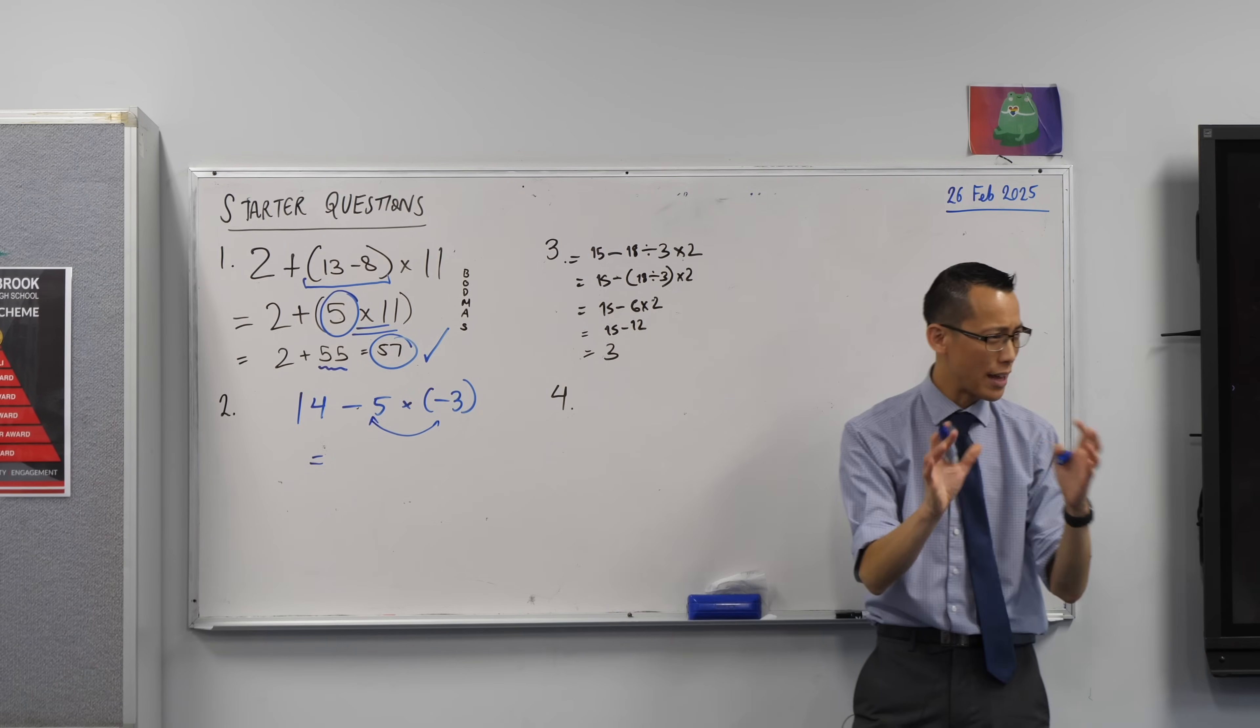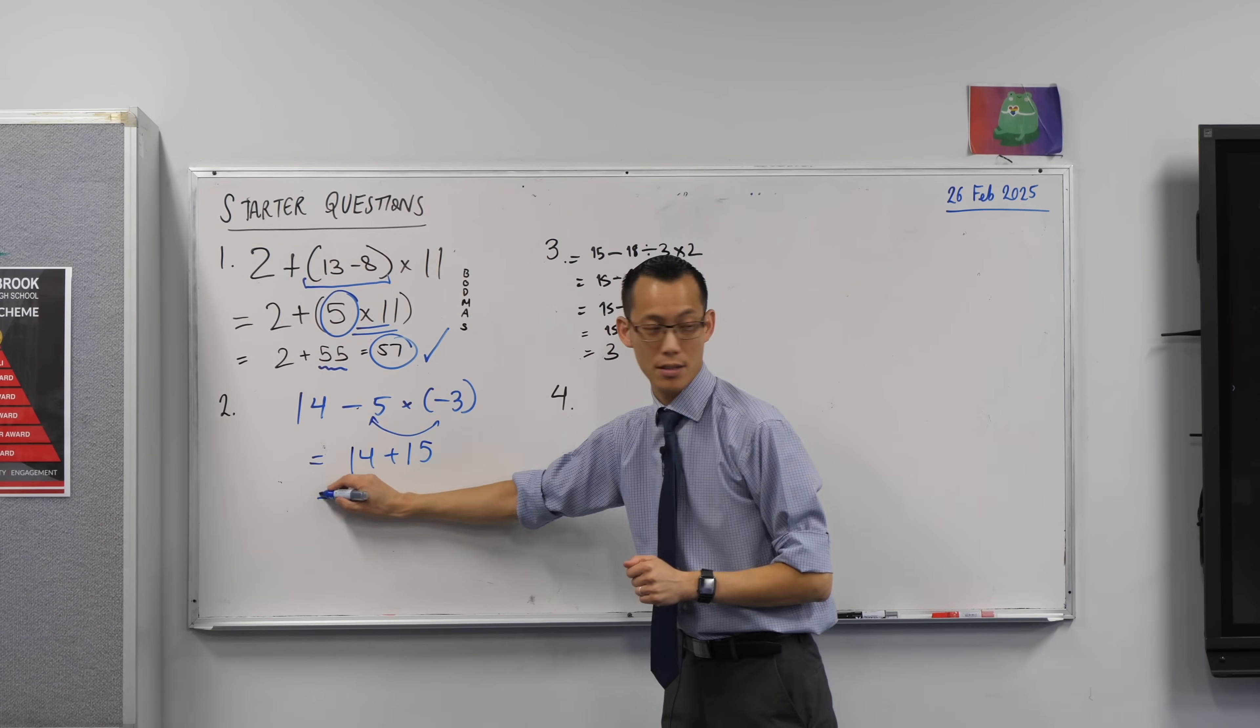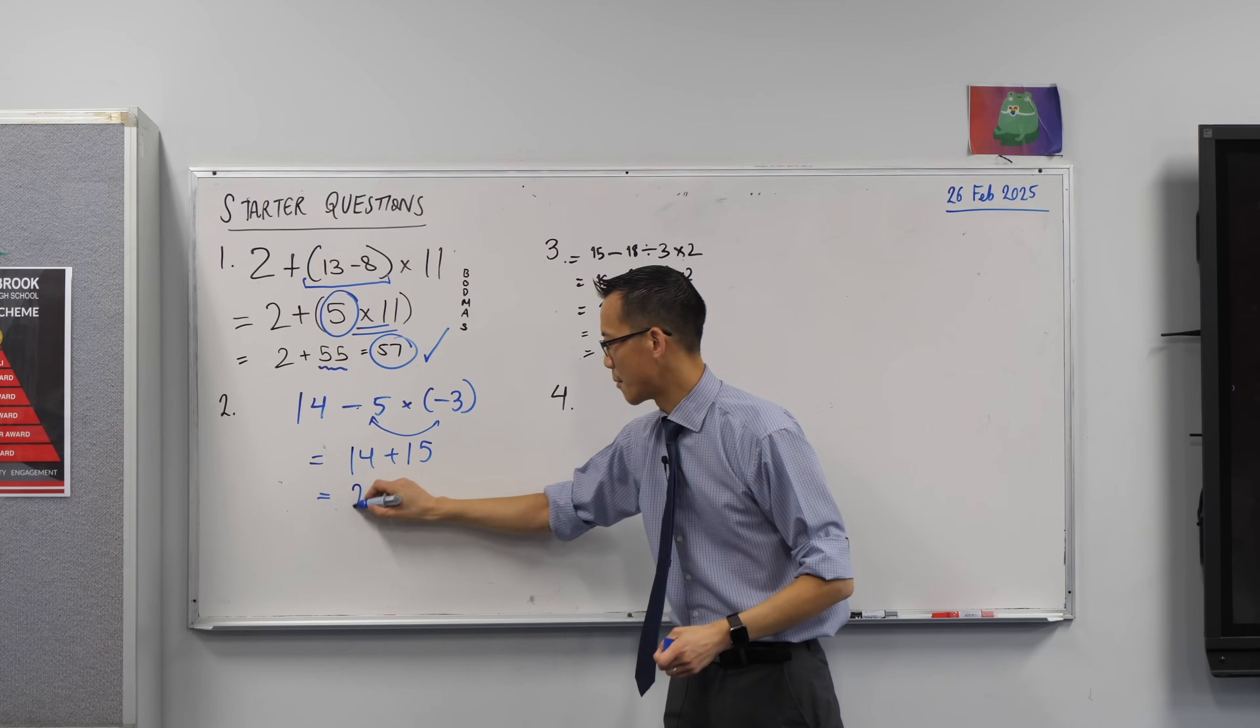All right. So there's a double negative there, right? Which is always a bit tricky, but we are going to indeed get 15, which gives us a final answer of 29. Fantastic. Okay. Happy times.